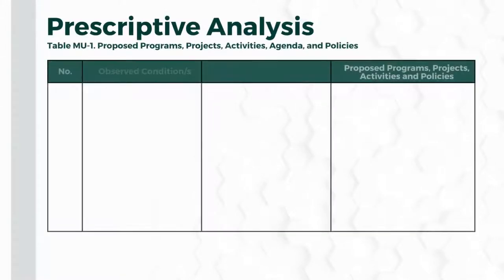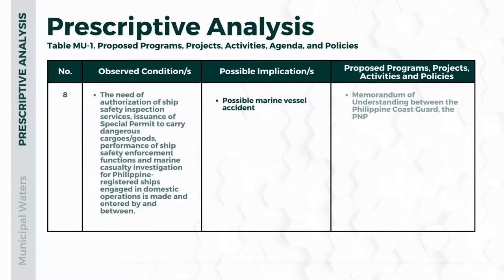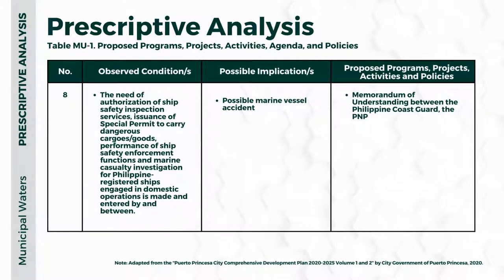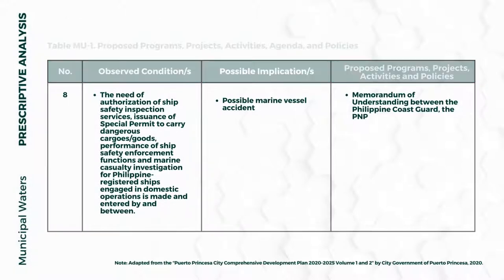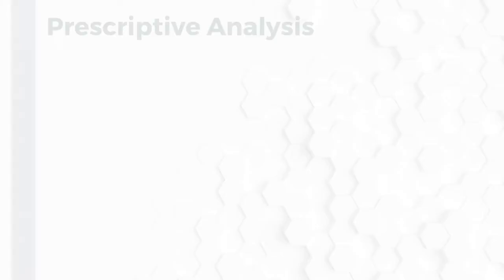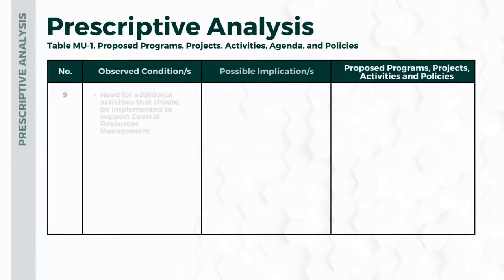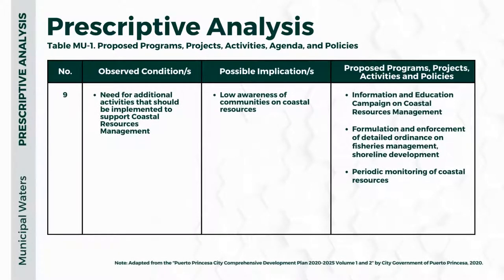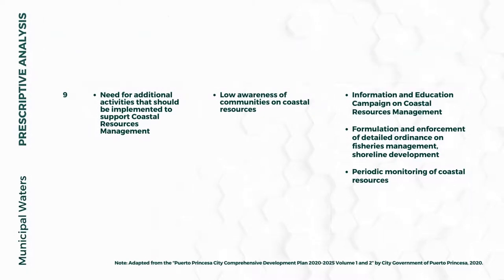Number eight: need for authorization of ship safety inspection services, issuance of special permits for dangerous cargoes, performance of ship safety enforcement functions, and marine casualty investigation for Philippine registered ships engaged in domestic operations. The possible implication is possible marine vessel accidents. The proposed program is a memorandum of understanding between the Philippine Coast Guard and the PNP. Number nine: need for additional activities to support coastal resource management. Proposed programs include information and education campaigns on coastal resources management, formulation and enforcement of detailed ordinances on fisheries management and shoreline development, and periodic monitoring of coastal resources.